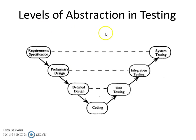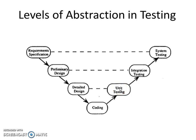This slide specifies the levels of abstraction in the waterfall model of SDLC, that is the software development lifecycle. This is helpful in identifying distinct levels of testing and their objectives. The diagram emphasizes the correspondence between software testing and design levels: requirement specification maps to system testing, preliminary design corresponds to integration testing, and detail design corresponds to unit testing.